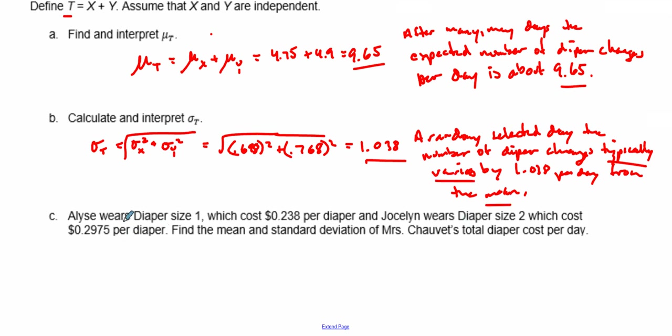Now finally, Alyssa wears diaper size 1 which costs $0.238 per diaper, and Jocelyn wears size 2 which costs a little bit more. Find the mean and standard deviation of the total cost for the diapers. So the total cost, we're going to find the mean of this cost, we'll call that C. We take the number of diapers for X, which is Elise, multiply that by 0.238 and add that to the number of diapers for Jocelyn. We're going to multiply that by 0.2975 and add those two together.